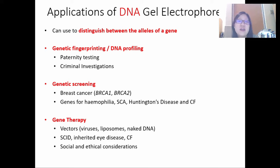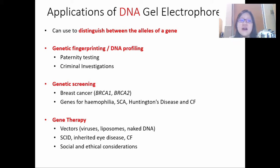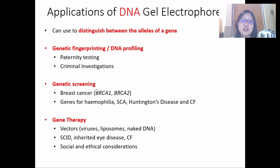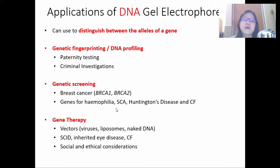It also requires other tools and methods which you don't learn in detail, but you do get a rough idea. Genetic screening, in simple terms, is genetic testing — testing a human's DNA in order to find diseases. This could be for breast cancer, hemophilia, SCA, Huntington's disease, or cystic fibrosis, for example.